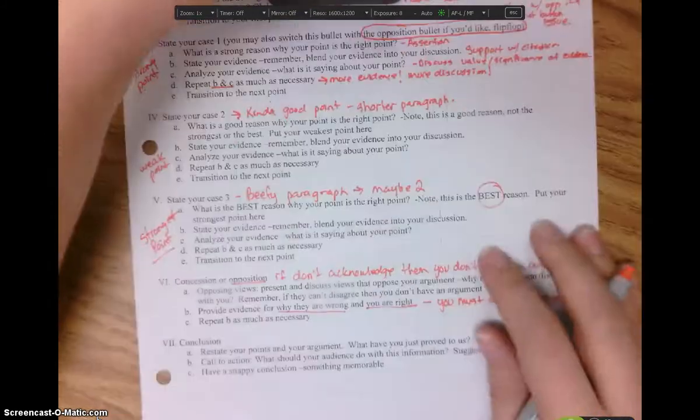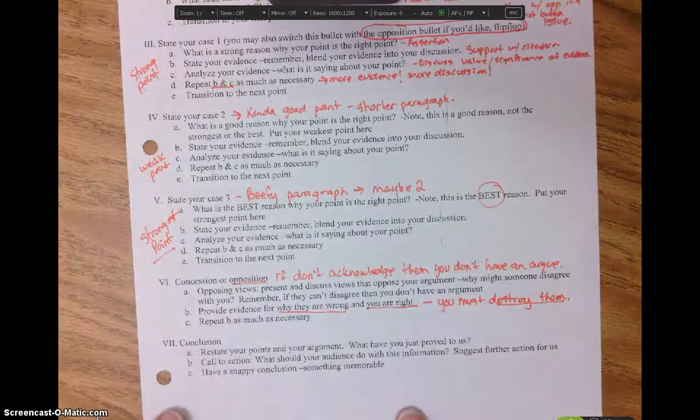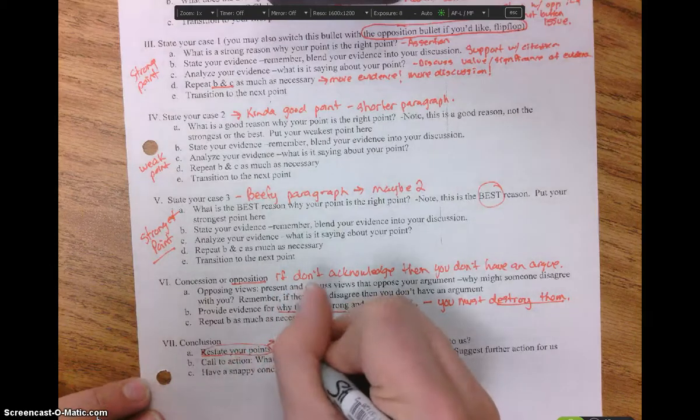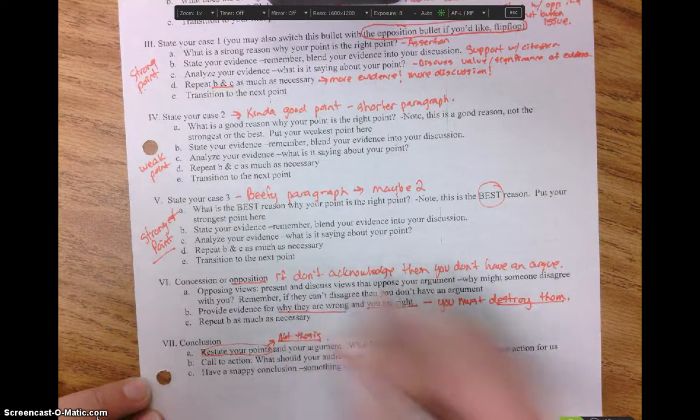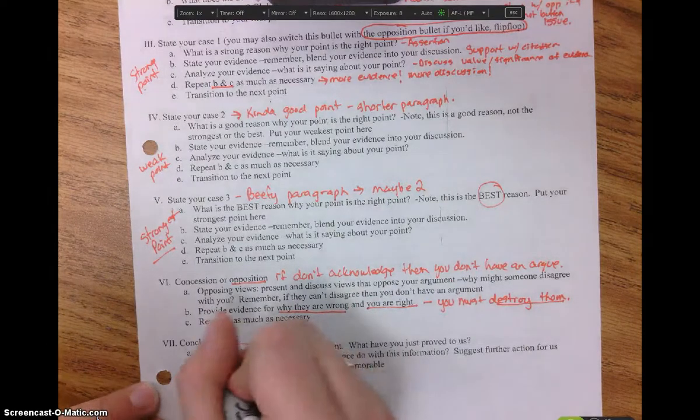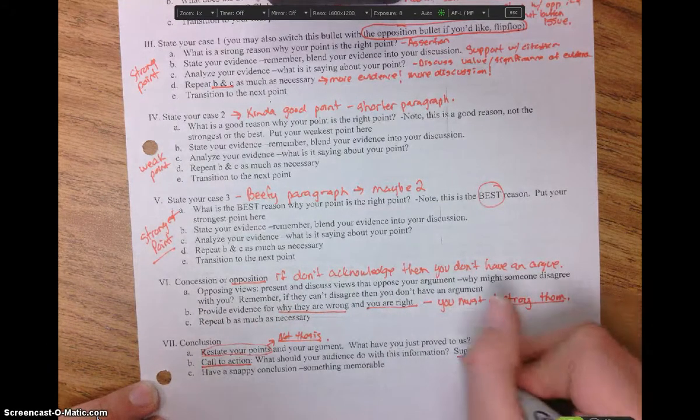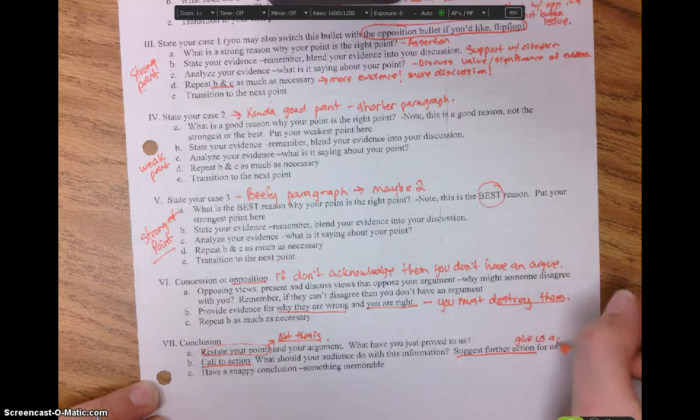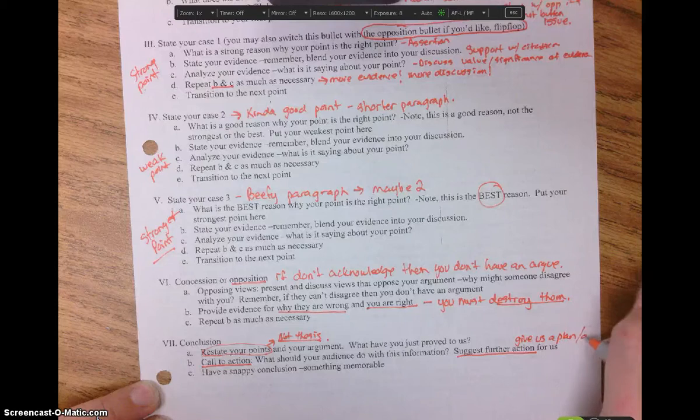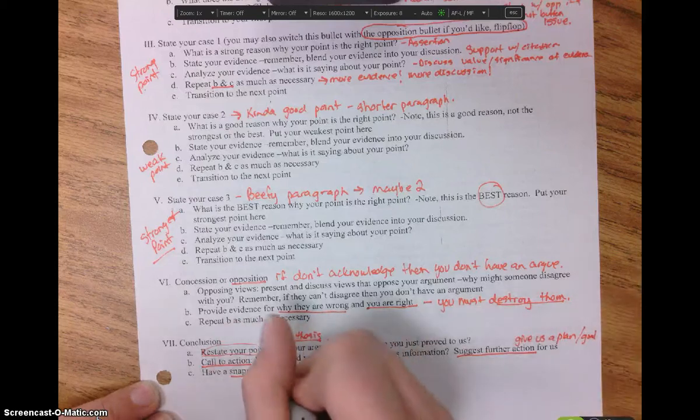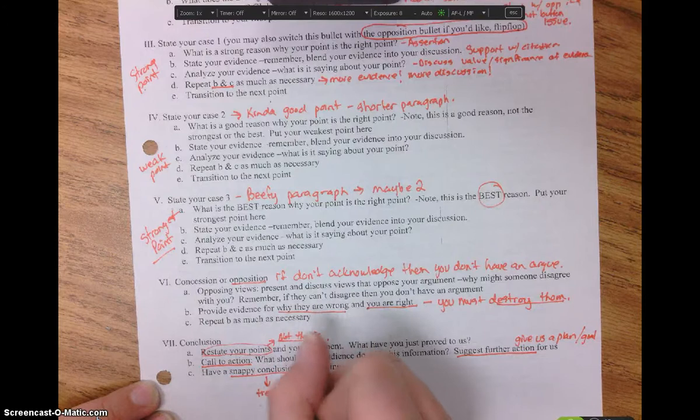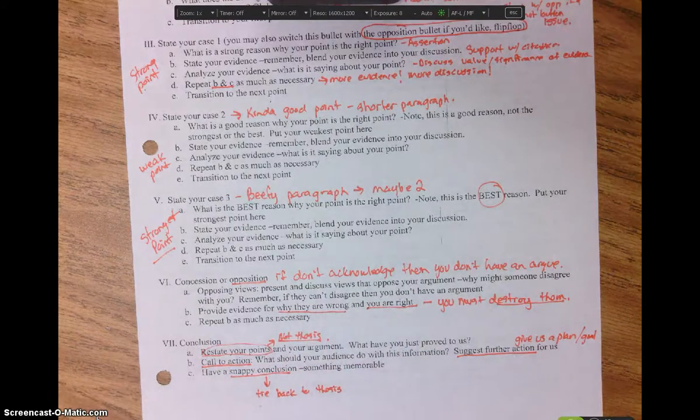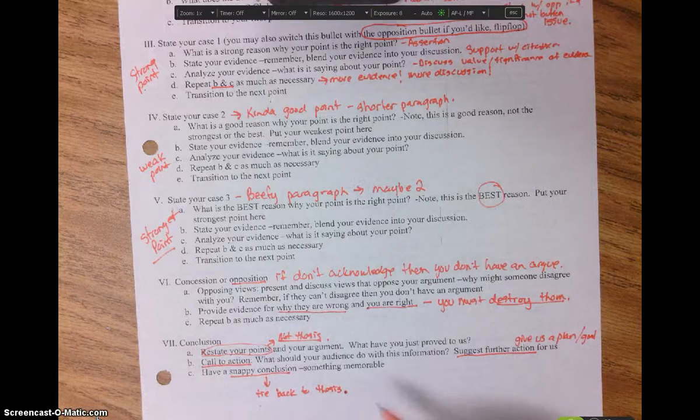And then down here at the end, you need to have the most important thing is to restate your point. This is not your thesis. You just need to cover all your points again in a sentence or two. You need to call us to action. What are we supposed to do? Suggest further action for us. Give us a plan or a goal. And then have a snappy conclusion. You want this to tie back to your thesis. So if you do tell a story in your thesis, this is a way to come back to your thesis. And I'm going to show you on the back.